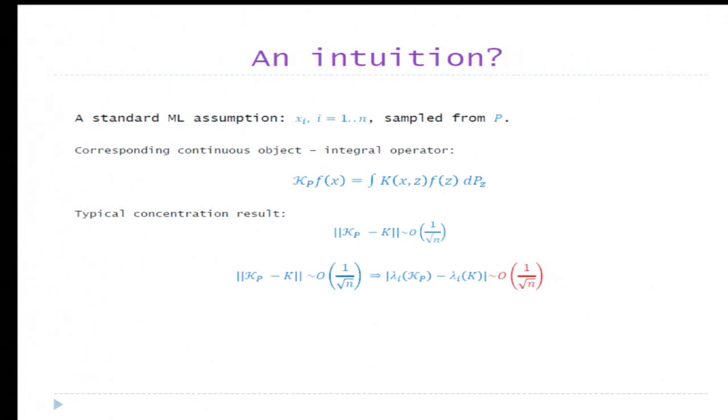Here is one way you can think of it. Take your xi from 1 to N, and you can view a kernel matrix as an empirical version of a kernel operator. So a kernel operator is a population version, and a matrix is an empirical version. Now if you use concentration theory, there is some sort of semi-standard concentration result which says that the norm of a kernel operator minus the kernel matrix is of the order of 1 over square root of N. That would suggest that by some sort of standard perturbation algorithm, the eigenvalues of those two objects should be also within 1 over square root of N.